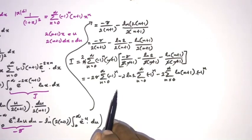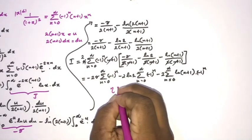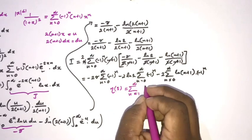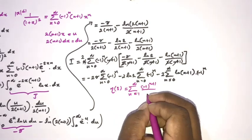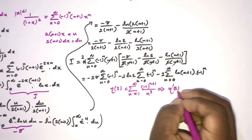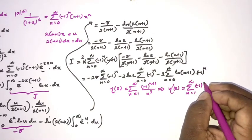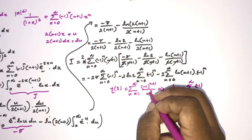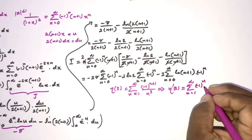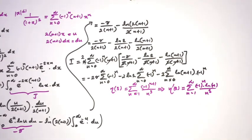To evaluate these sums we use the Dirichlet eta function: η(s) = Σ(n=1 to ∞) (−1)^(n+1) / nˢ. Differentiating gives η'(s) = Σ(n=1 to ∞) (−1)^(n+1) · (−ln n) / nˢ.